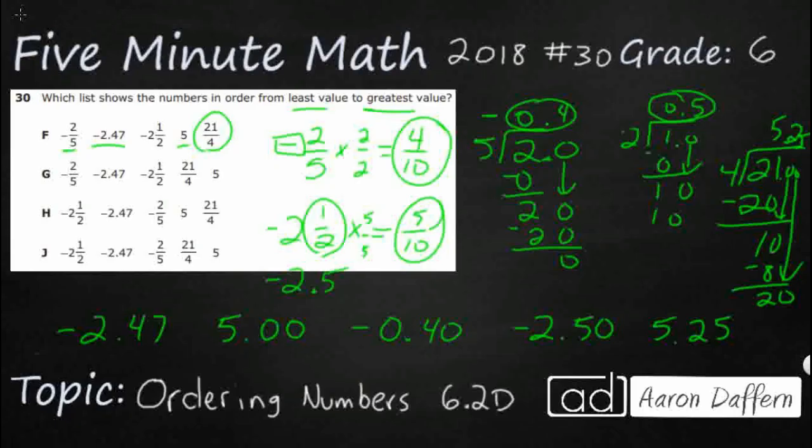So what we want to do is we want to start putting these in order from greatest to least. Our smallest number is going to be negative. We've got three negative numbers. Which one is farthest away from zero? It's going to be this one. It's going to be this negative 2.5, which remember was this negative 2 and a half, so that's going to be first. So let's get rid of this one. Let's get rid of this one, because these two have it next.